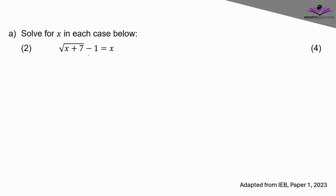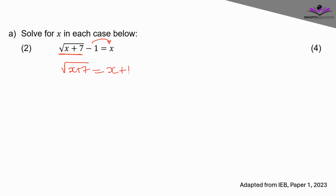Question 1a2: we're solving for x. This is a surd equation, so we have to isolate the surd so that we have a surd on one side and everything else on the other side. We're going to add 1 to both sides of the equation, so it becomes square root of (x + 7) is equal to x + 1.